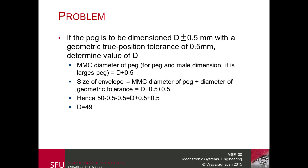For the peg, the MMC dimension is d plus 0.5, and since geometric variation causes the envelope to grow, we add the geometric tolerance. So we equate: 50 minus 0.5 minus 0.5 equals d plus 0.5 plus 0.5, which gives d = 49.